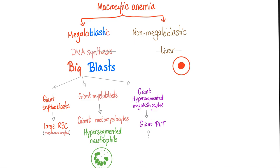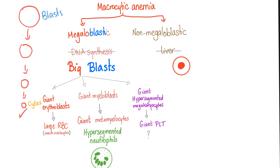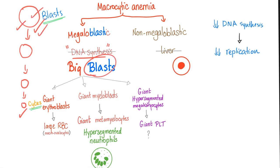In megaloblastic anemia, the problem is decreased DNA synthesis, so you have big blasts because you cannot synthesize DNA. In hematopoiesis, cells start as big blasts and then mature, getting smaller and smaller into a mature RBC, white blood cell, or platelet. If you cannot synthesize DNA, cells are stuck in their immature blast form, which is big. All cell lines are affected: giant erythroblasts and large RBCs called macroovalocytes, giant myeloblasts and giant metamyelocytes with hypersegmented neutrophils, and giant hypersegmented megakaryocytes leading to giant platelets — that's why we call it megaloblastic.